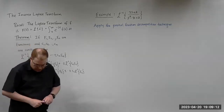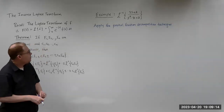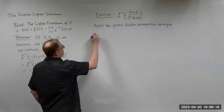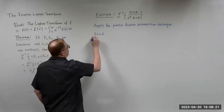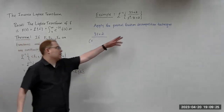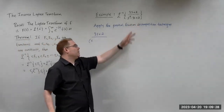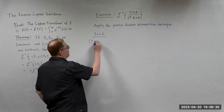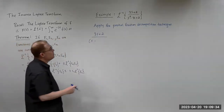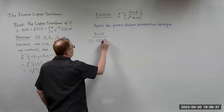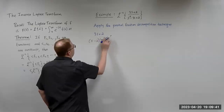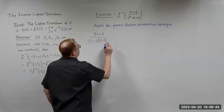So let's say we have: find the Laplace inverse of 3S plus 2 all divided by S squared minus 3S plus 2. The strategy here is that this denominator polynomial is factorable, so we can apply partial fraction decomposition.